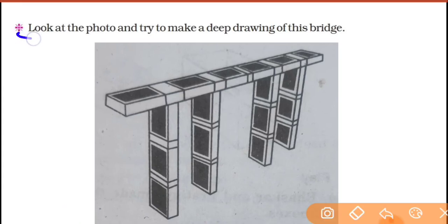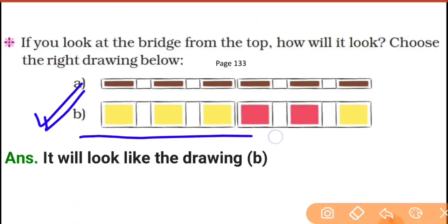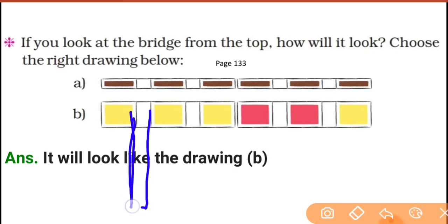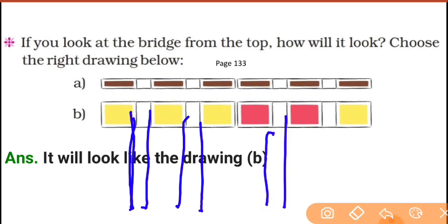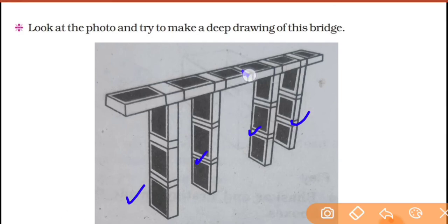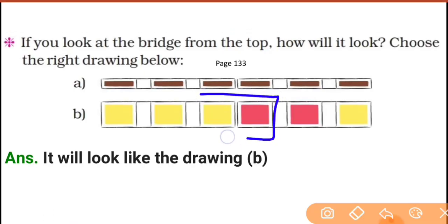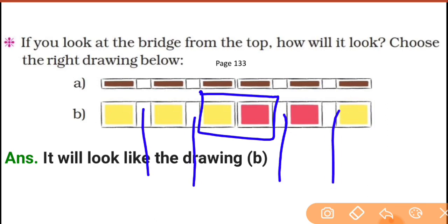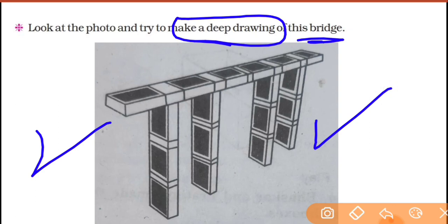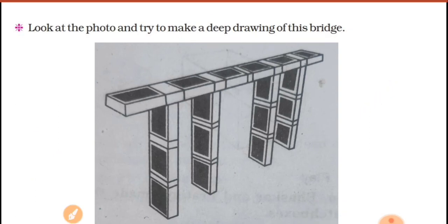Now, look at the photo and make a deep drawing of this bridge. You will draw four pillars — one here, one more here, and two more to get four pillars total in this bridge. In the middle, the pillars are joined. There are only four pillars — draw the deep drawing of the bridge like this. Draw it nicely in your notebook using a pencil. That's all for today in mathematics — thank you, take care.